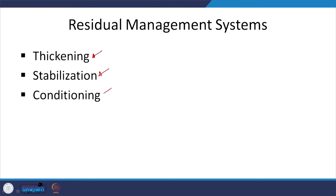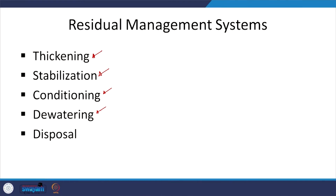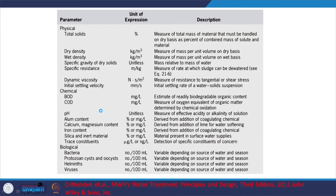One aspect is conditioning — you are going to condition it or prepare it so that it can be dewatered. Dewatering — we looked at that particular aspect. We are removing the water as much as possible so that it is relatively more compact and easy to handle. And then we are going to look at disposal.